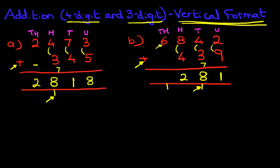And lastly, we've got the thousands. 6 plus 0, which is 6. But we've got 1 here. So, 6 plus 1 is 7. And that is our answer. 7,281.